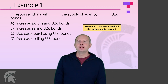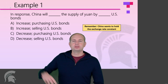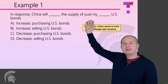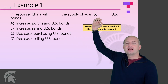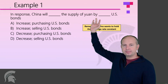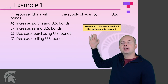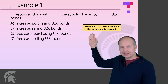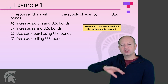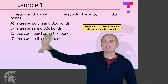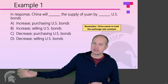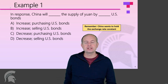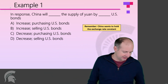In response, China will increase or decrease the supply of yuan by buying or selling US bonds. Remember, China wants to hold the exchange rate constant. So based on the last question, we said there's an increase in demand for Chinese currency. So how are they going to respond?